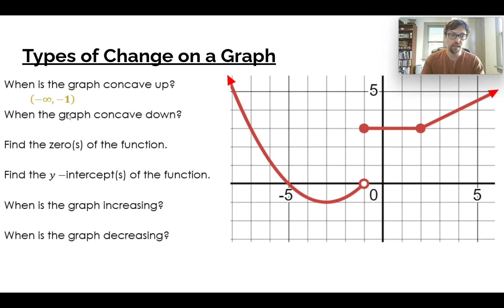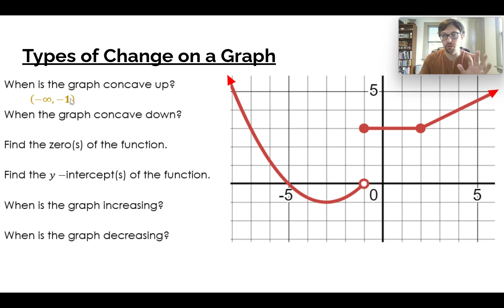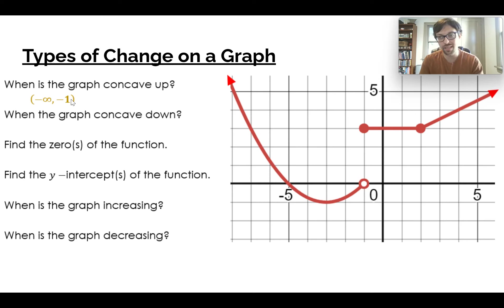So we are concave up from negative infinity to negative one. I put a parenthesis on negative one because there's an open circle there. I'm not going to be strict about brackets or parentheses on these intervals for increasing, decreasing, concave up, and concave down — we need calculus to determine which one is which.